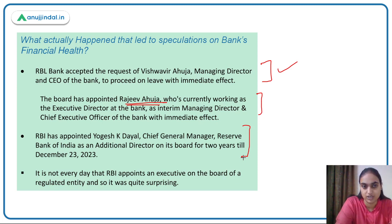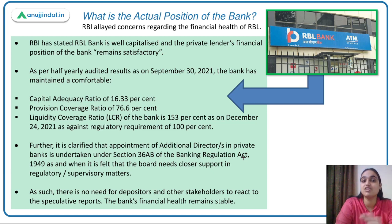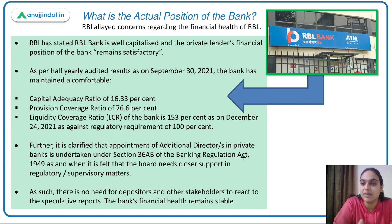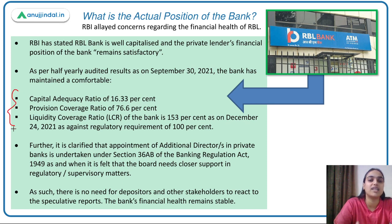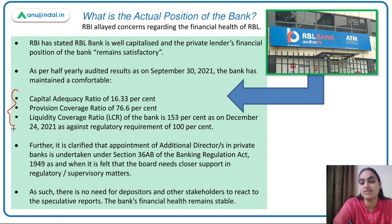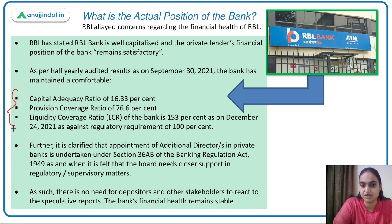RBI subsequently issued a notification allaying all concerns about RBL Bank's financial health, confirming the bank is well capitalized and in a satisfactory financial position. Key data shared included a Capital Adequacy Ratio of 16.33%, Provision Coverage Ratio of 76.3%, and Liquidity Coverage Ratio of 153% — well above the usual 100% requirement. There is no need to worry; the bank's financials are satisfactory.